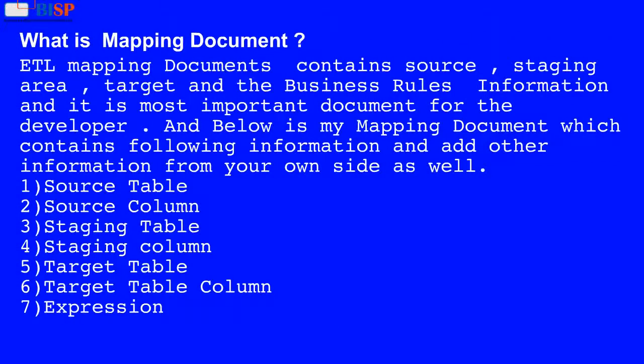What is a mapping document? ETL mapping documents contain source, staging area, target, and the business rules information, and it is the most important document for the developer. Below is my mapping document which contains the following information — add other information from your own site as well.